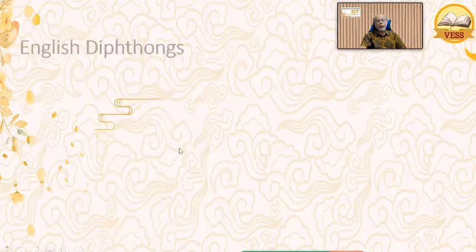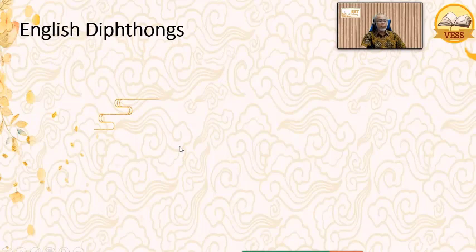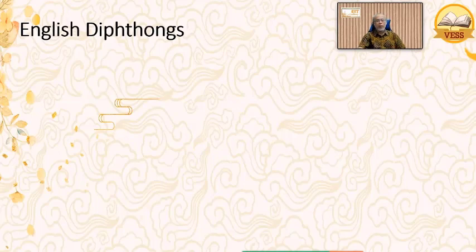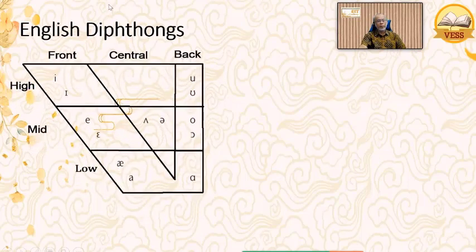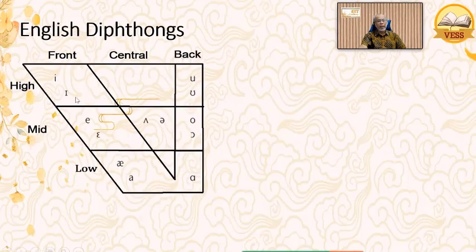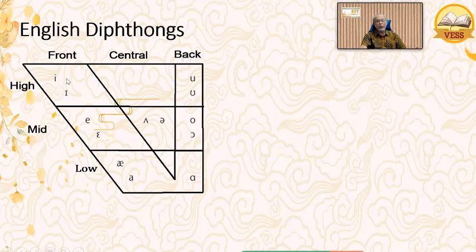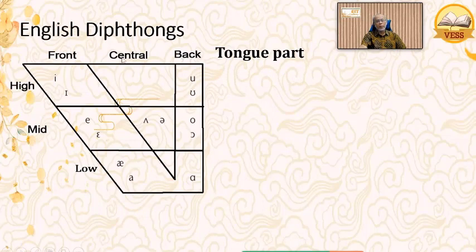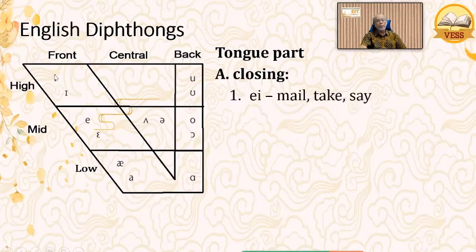Now let's continue with English diphthongs. A diphthong is a sound produced by moving the tongue from one vowel position to another vowel position. Going back to the vowel chart with front, central, back, high, mid, and low — a closing diphthong is one where the tongue moves to a high position, closing the mouth. The first closing diphthong is /eɪ/ — as in 'male', 'take', 'say'.